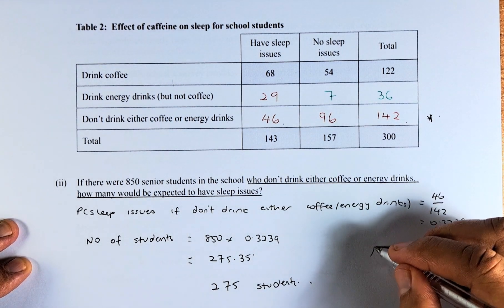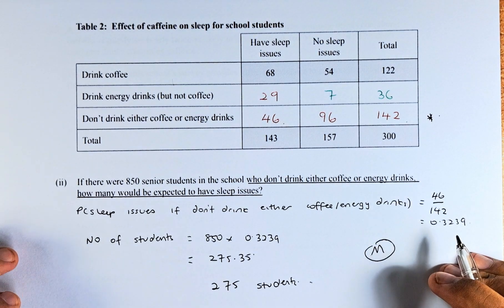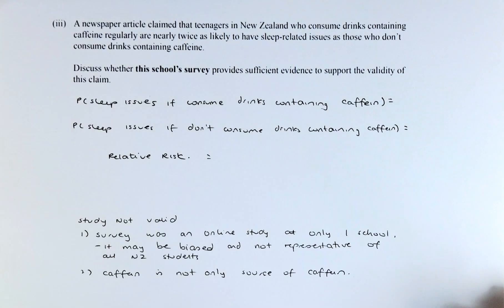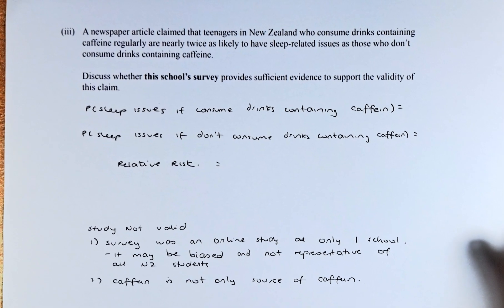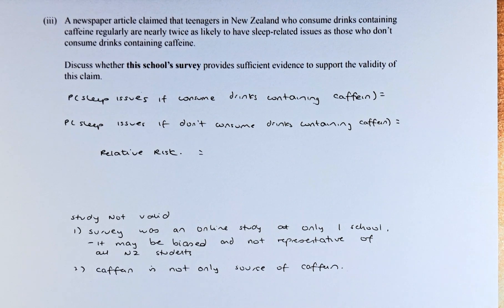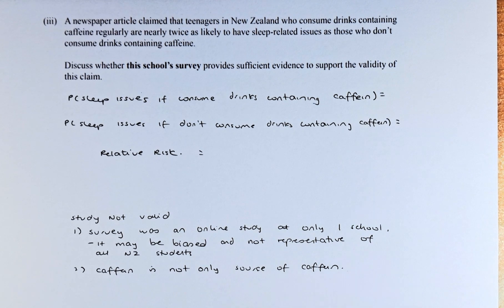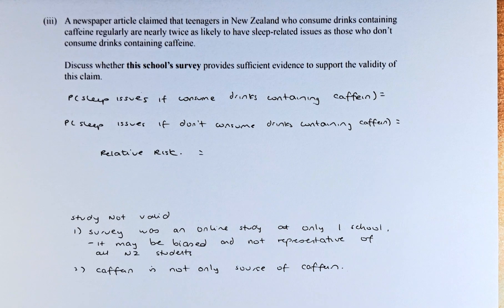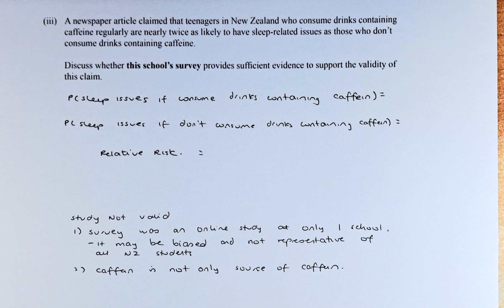If you can get that right, you get a merit for this question. Last but not least, we have a claim question. We shall read this: a newspaper article claims that teenagers in New Zealand who consume energy drinks containing caffeine are twice or nearly twice as likely to have sleep-related issues than those who do not drink caffeine drinks. To address that, we need to solve using the data from the article.